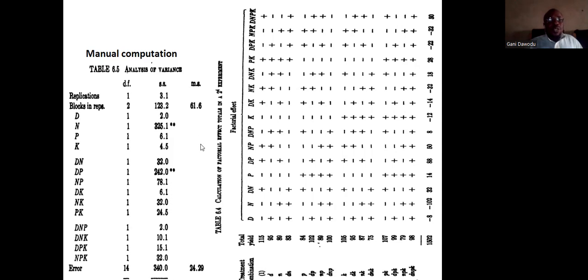But there are some things of note. Blocks in rep, we said the degrees of freedom is 2, and that is 123.2. That is not quite right. But this is just giving you a variety. If we go by blocks, it will be this. But we saw that the block is confounded with the DNPK, which is the defining contrast. It is confounded with DNPK. So this is what a human being will do. But obviously R will not do this.